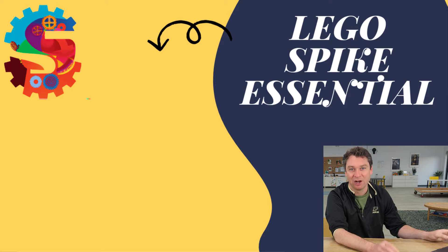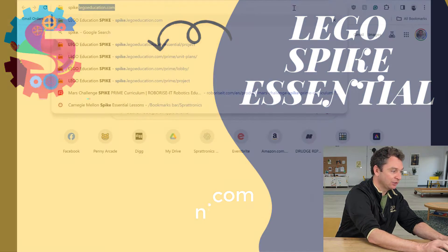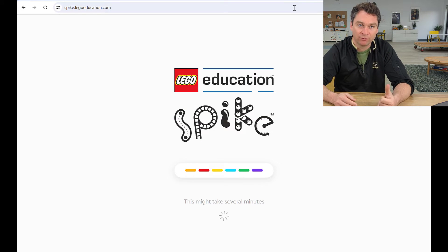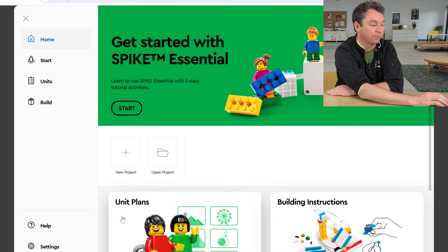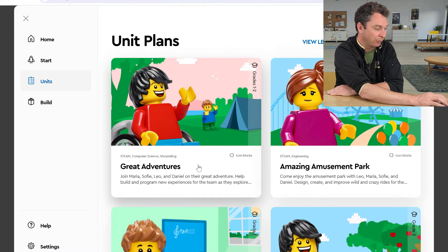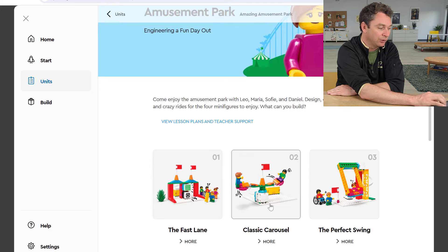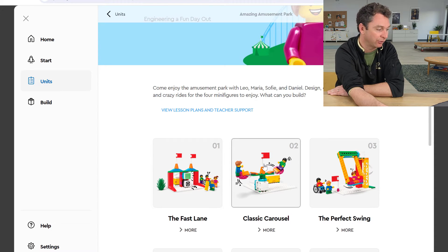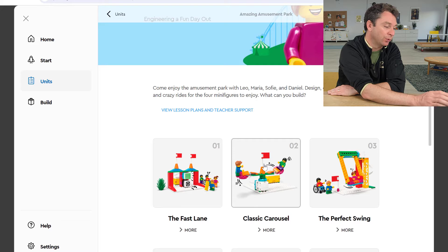Here's what I'd like you to do. On your computer, go to spike.legoeducation.com. This is where we're going to get our building directions for today, as well as start coding. We're using Spike Essential, the green kit. We're going to click on Unit Plans, and we're moving on to amazing amusement park. We're going to start with lesson two, the classic carousel.